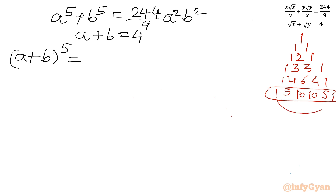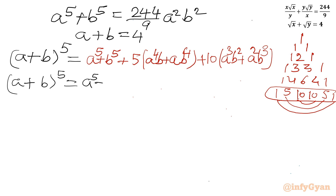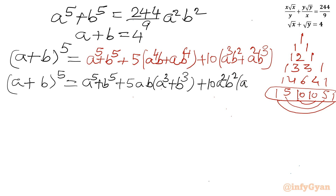Expanding (a+b)⁵: grouping first and last terms gives a⁵ + b⁵. With multiplier 5: 5(a⁴b + ab⁴). With multiplier 10: 10(a³b² + a²b³). So (a+b)⁵ = a⁵ + b⁵ + 5ab(a³ + b³) + 10a²b²(a + b).